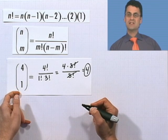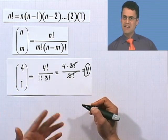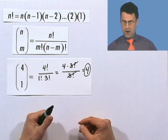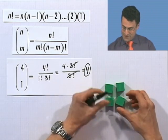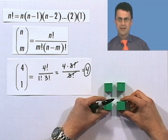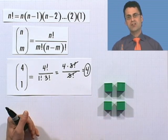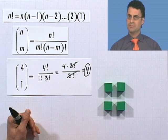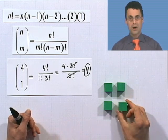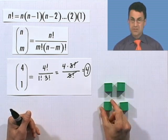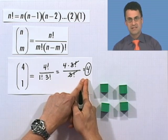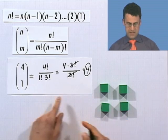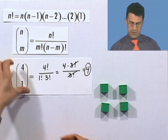So 4 choose 1 is 4, and that makes sense. If I have 4 objects — and I told you there'd be blocks — and I want to choose 1 of them: I could choose this one, this one, this one, or this one. There are 4 different ways. That's what this number represents: how many different ways there are of choosing exactly one object out of a group of 4.